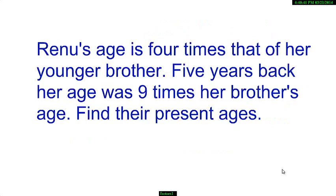Let us consider the following problem. Reno's age is 4 times that of her younger brother. 5 years back her age was 9 times the age of her brother. Find their present ages.